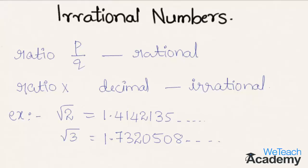But there are some numbers which cannot be written as a ratio of two integers and can be represented in decimal form. These are called irrational numbers. So we can say that numbers which are not rational are irrational numbers.